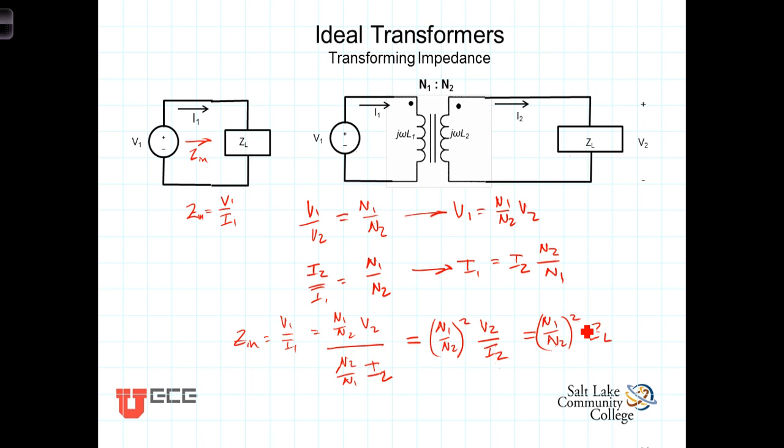We can get a little bit of an intuitive feel for what's happening here by considering, first of all, this source without the matching transformer. Again, the impedance is just V1 over I1. Now, we insert this ideal transformer, and let's just assume that the turns ratio is such that the number of turns on the primary is greater than the number of turns on the secondary.